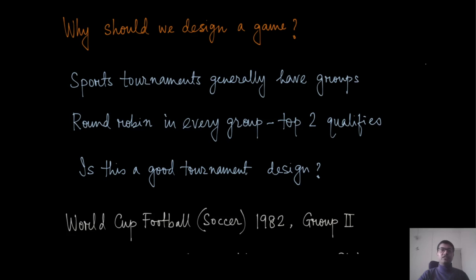A very natural question is: why should we design a game? The fair division example applies to other places but is quite limited. Let us give one more example where mechanism design is very important — this comes from sports tournaments. Typically, most tournaments, say a football tournament, have a round-robin format in every group: teams are partitioned into smaller groups, first play round robin, and then the top two qualify.